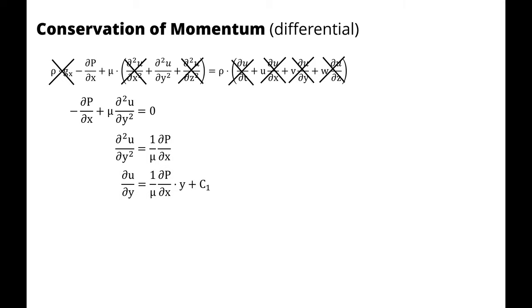Integrating one time, I'm left with that same quantity times y plus a constant. Integrating a second time, I'm left with u(y) = (1/2μ)(∂P/∂x)y² + C₁y + C₂.